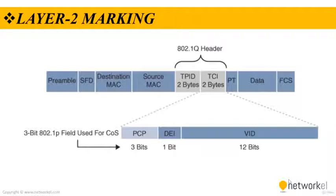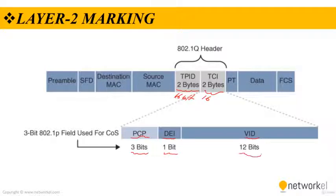The 802.1Q standard is an IEEE specification for implementing VLANs in layer 2 switched networks. The 802.1Q specification defines two 2-byte fields — TPID and TCI — which are inserted within an Ethernet frame following the source address field. As you can see, TPID is 16 bits and TCI is also 16 bits. Within TCI we have PCP (3 bits), DEI (1 bit), and VID (12 bits).